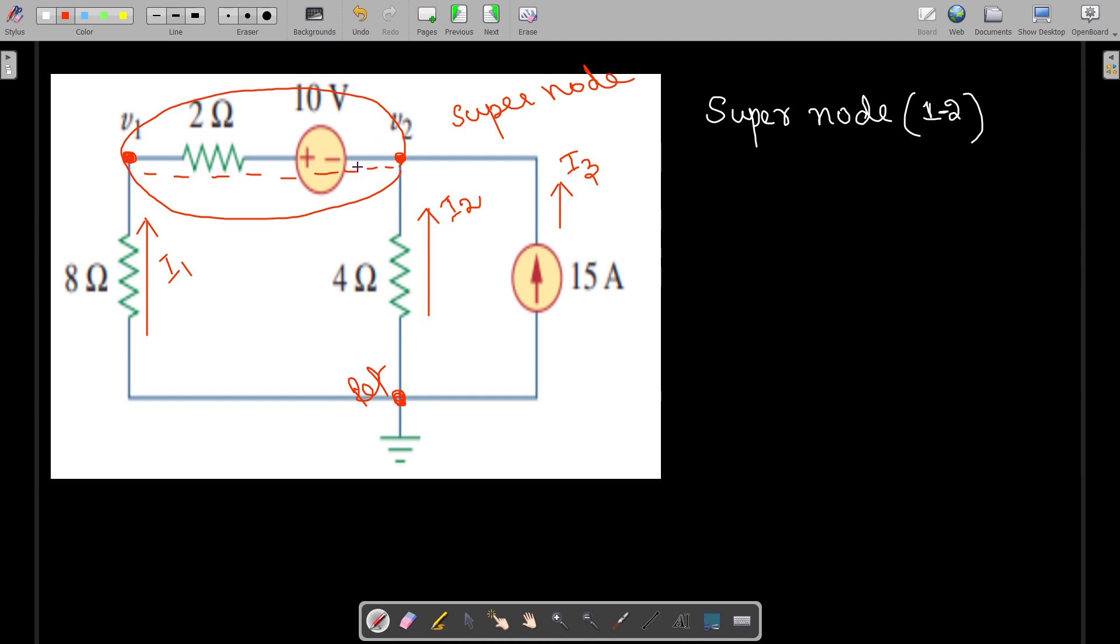For this super node we can apply KCL because it is covered under our nodal analysis. The entering currents equal the leaving current, so here we have the entering currents as i1 plus i2 and i3, with no leaving current, so it equals 0.